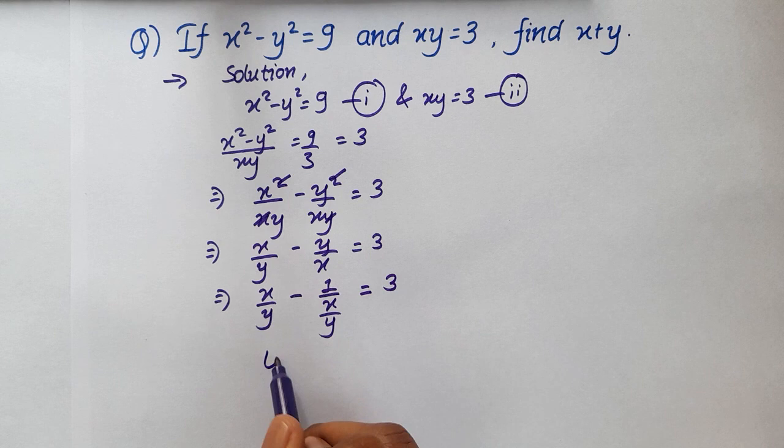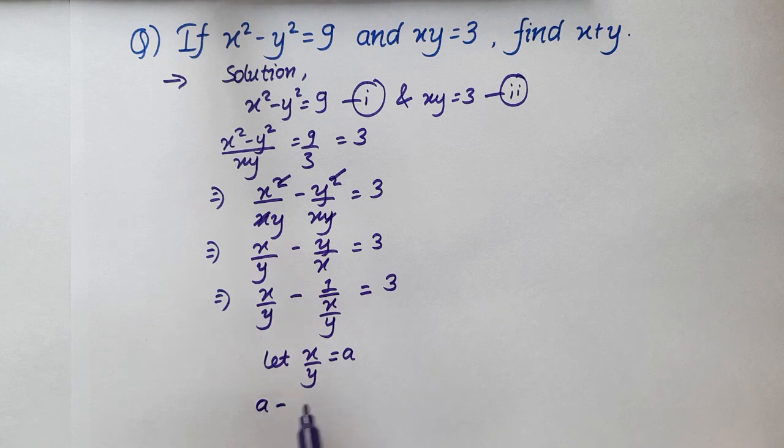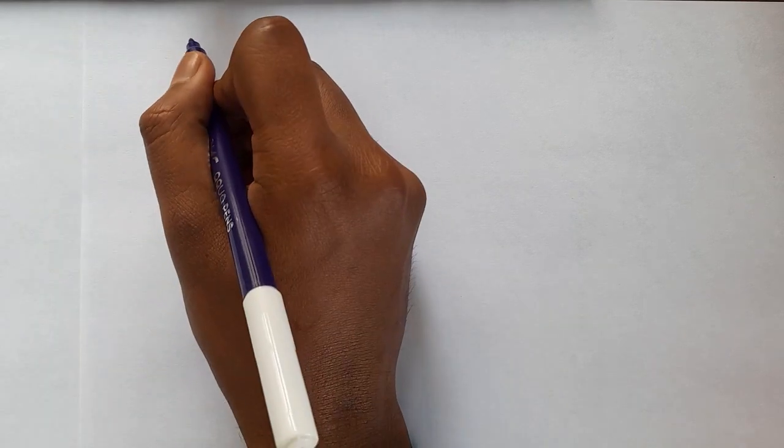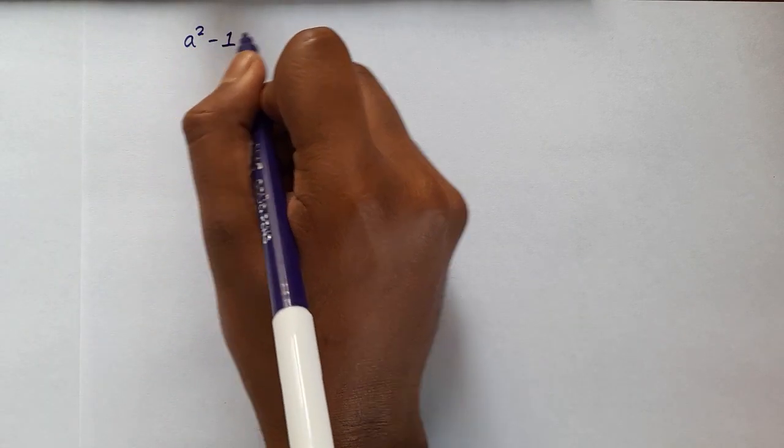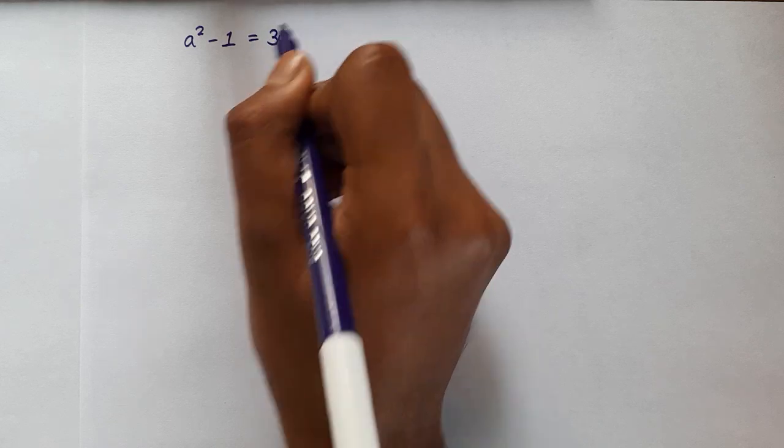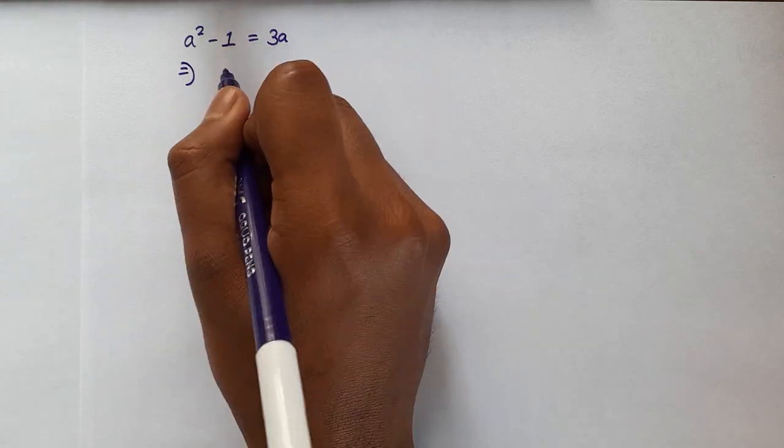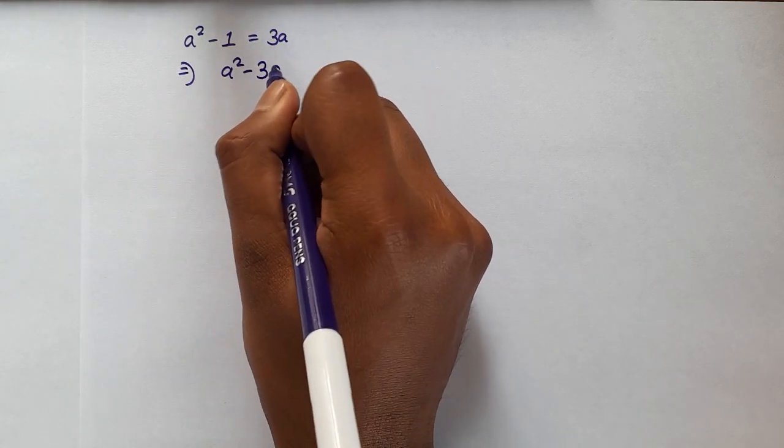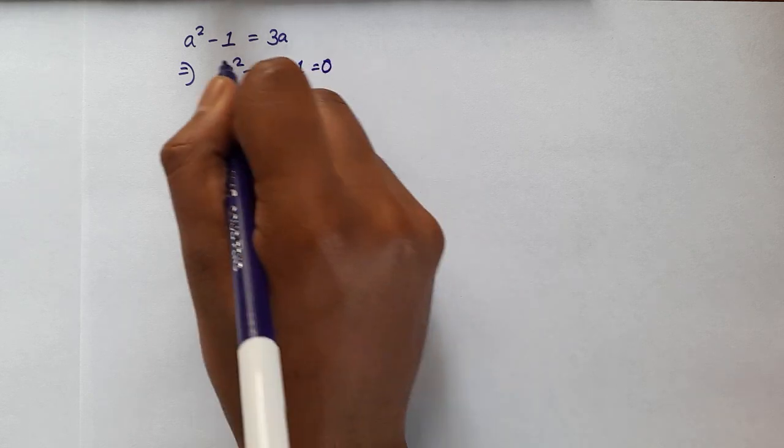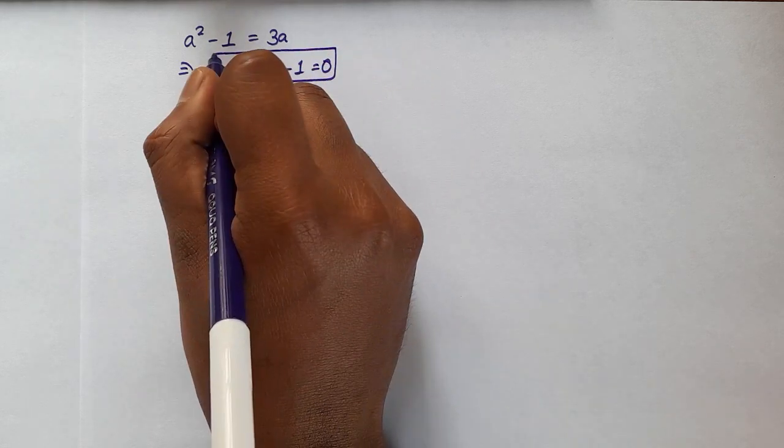Now let us assume that x over y is equal to a. So now if we replace the value here we will have a minus 1 over a equal to 3. On further solving we will have a square minus 1 equal to 3a. If we subtract 3a on both sides we will have a square minus 3a minus 1 equal to 0. And this is a quadratic equation in a.